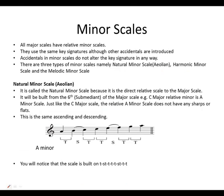Minor scales. As we have learned in the previous week, all major scales have relative minor scales. They use the same key signatures, although other accidentals are introduced. Accidentals in minor scales — remember this: do not alter the key signature in any way. There are three types of minor scales, namely the natural minor scale, also known as the Aeolian scale, the harmonic minor scale, and the melodic minor scale.